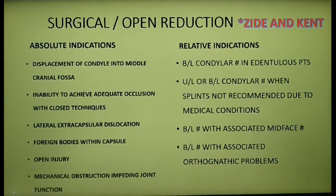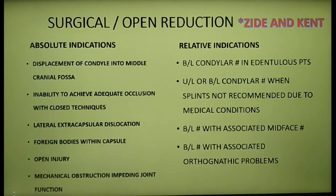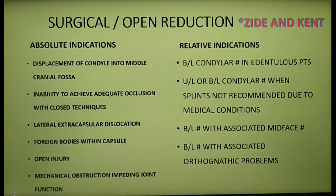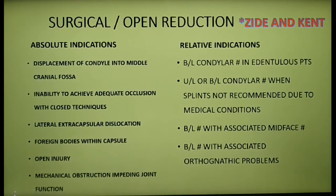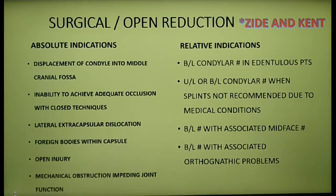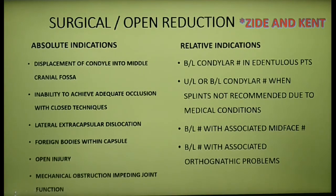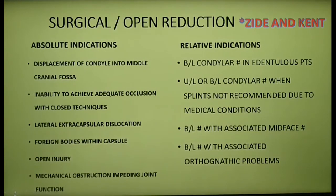The relative indications include: bilateral condylar fractures in an edentulous patient where a splint cannot be fabricated due to severe ridge atrophy; unilateral or bilateral fractures where splinting is not recommended due to concomitant medical conditions, or where physiotherapy is not possible; bilateral fractures associated with comminuted mid-facial fractures; and bilateral fractures associated with other orthognathic problems. These are the absolute and relative indications for opening a mandibular condyle.